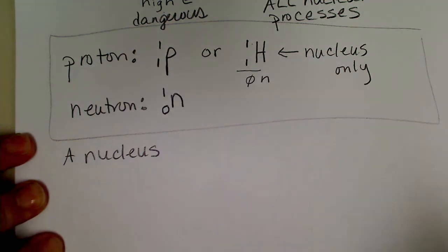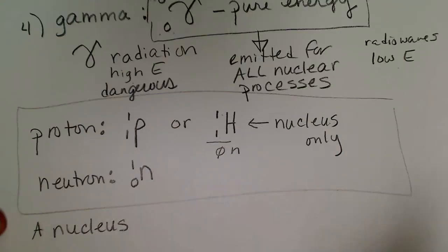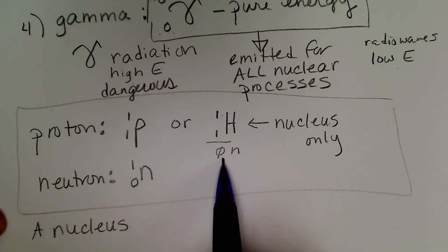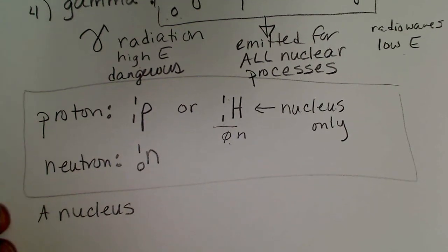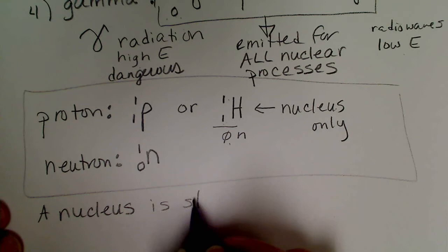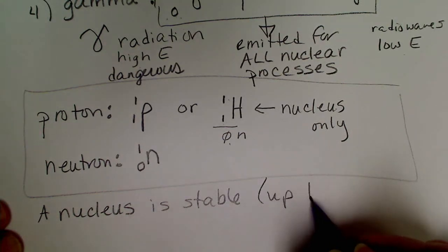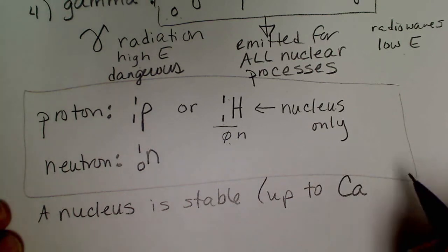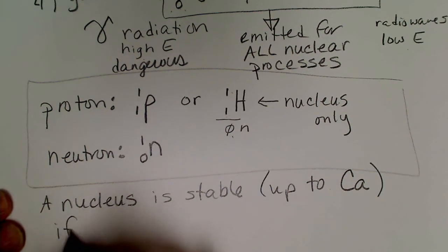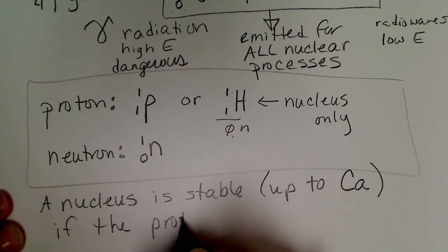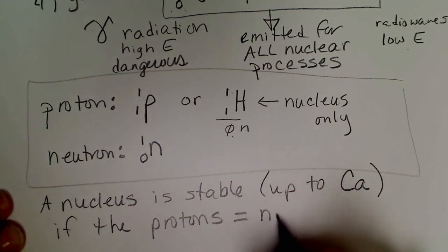So a nucleus we know has protons and neutrons, and protons repel each other. Hydrogen, the first element, only has one proton in the nucleus, so that one proton really doesn't require any neutrons to keep the protons separated. It's a lot more complicated than that - that would be a topic for maybe nuclear physics. But a nucleus is stable, let's just say up to calcium, that is atom number 20, if the protons and the neutrons are approximately the same number.